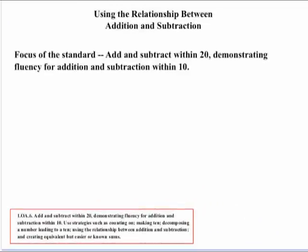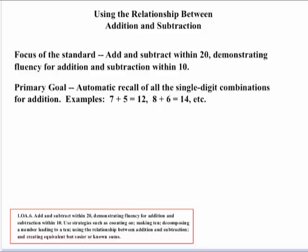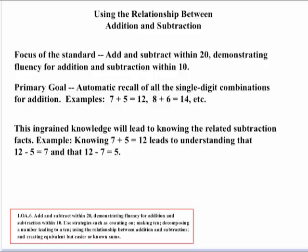Another strategy is using the relationship between addition and subtraction. The focus is to add and subtract within 20, but kids really need fluency for adding and subtracting within 10 first. A primary goal is that kids have automatic recall of all the single-digit combinations for adding, such as 7 plus 5 is 12, 8 plus 6 is 14, 9 plus 3 is 12. That ingrained knowledge will lead kids to automatically relate to subtraction facts — if they know 7 plus 5 is 12, they'll automatically know 12 minus 5 is 7, or 12 minus 7 is 5.